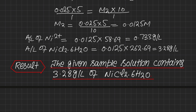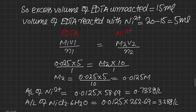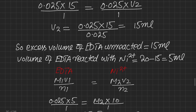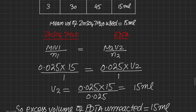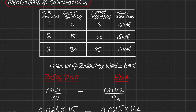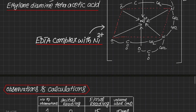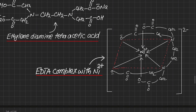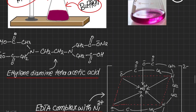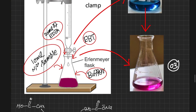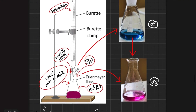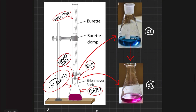The final result is that the given sample solution contains 3.28 g/L of nickel chloride·6H₂O. To avoid the lack of a sharp color change when nickel reacts with EBT, an indirect method was used: excess EDTA was added, some reacted with nickel and the remainder reacted with zinc sulfate. By subtracting the EDTA that reacted with zinc from the total EDTA added, the amount that reacted with nickel was found, allowing us to determine the amount per liter of nickel in the sample. Thank you, Allah Hafiz.